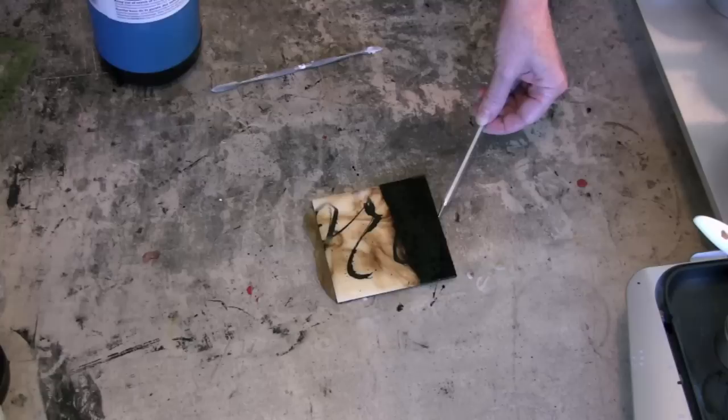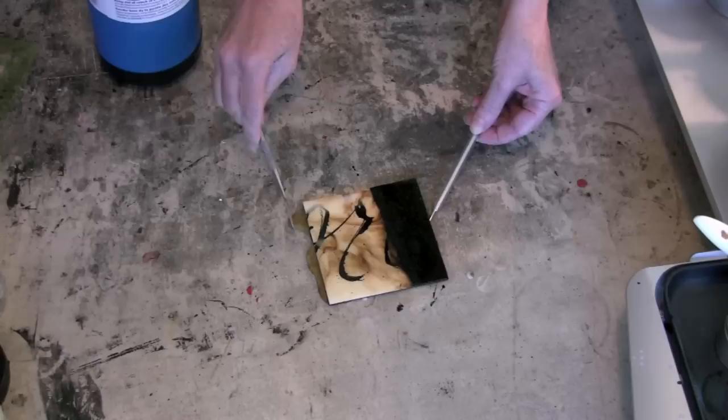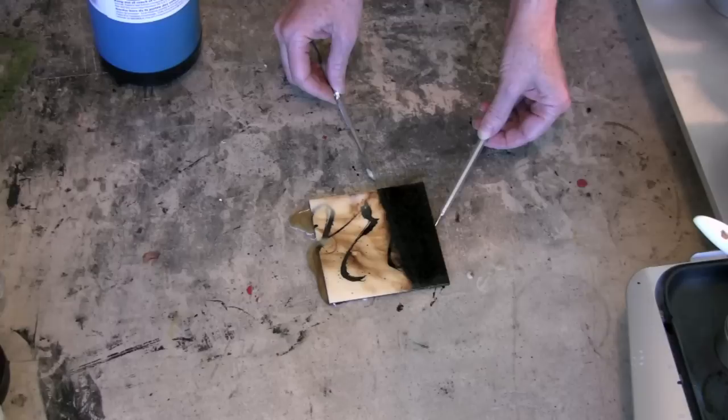Later I can just scrape that off the concrete board and reuse that as part of my wax sludge pot, so to speak. So here, just using another old dental tool or any kind of tool you can use to stabilize the piece, I'm just kind of turning the panel slightly.